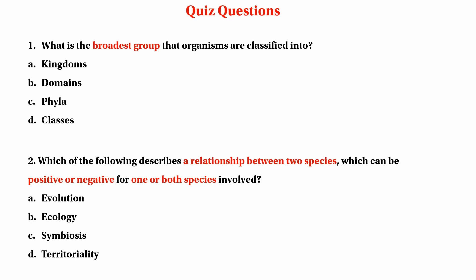We will talk about kingdom, domain, phylum, and classes. Kingdom, domain, phylum, classes — these are the taxonomic classification levels for organisms.